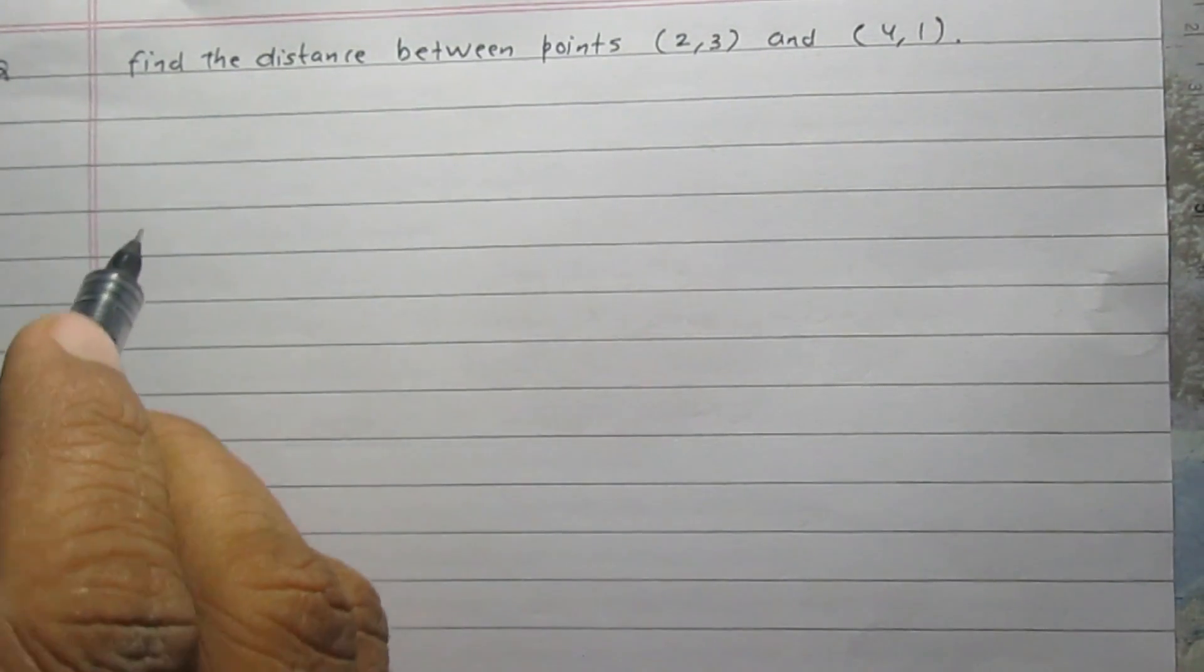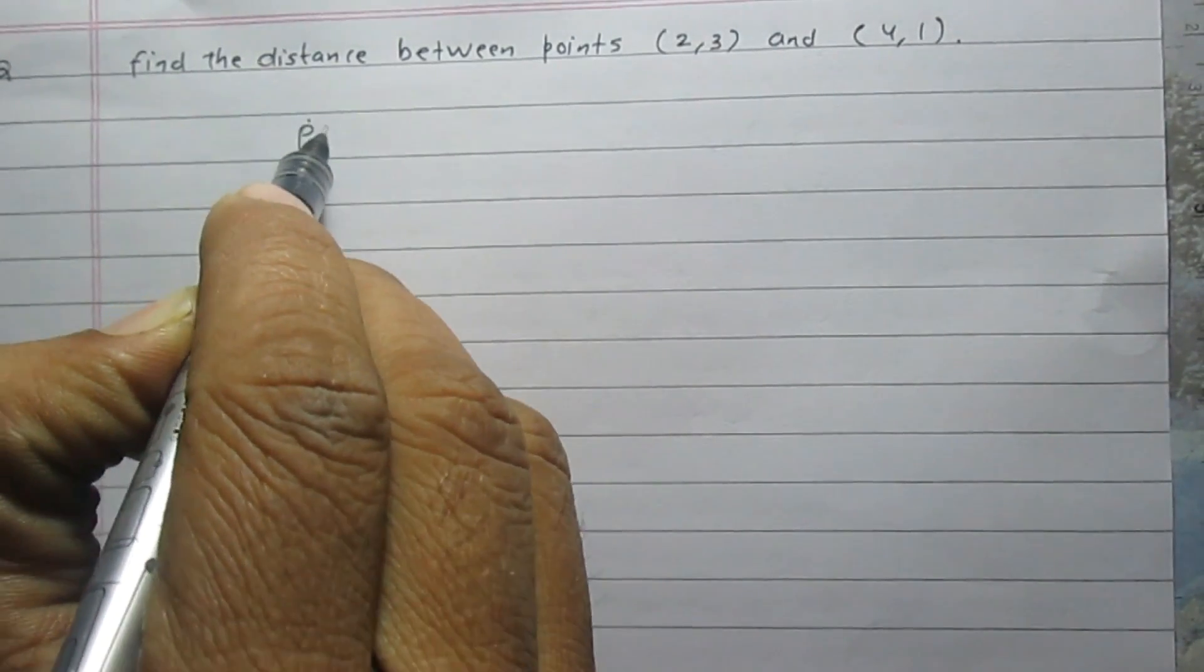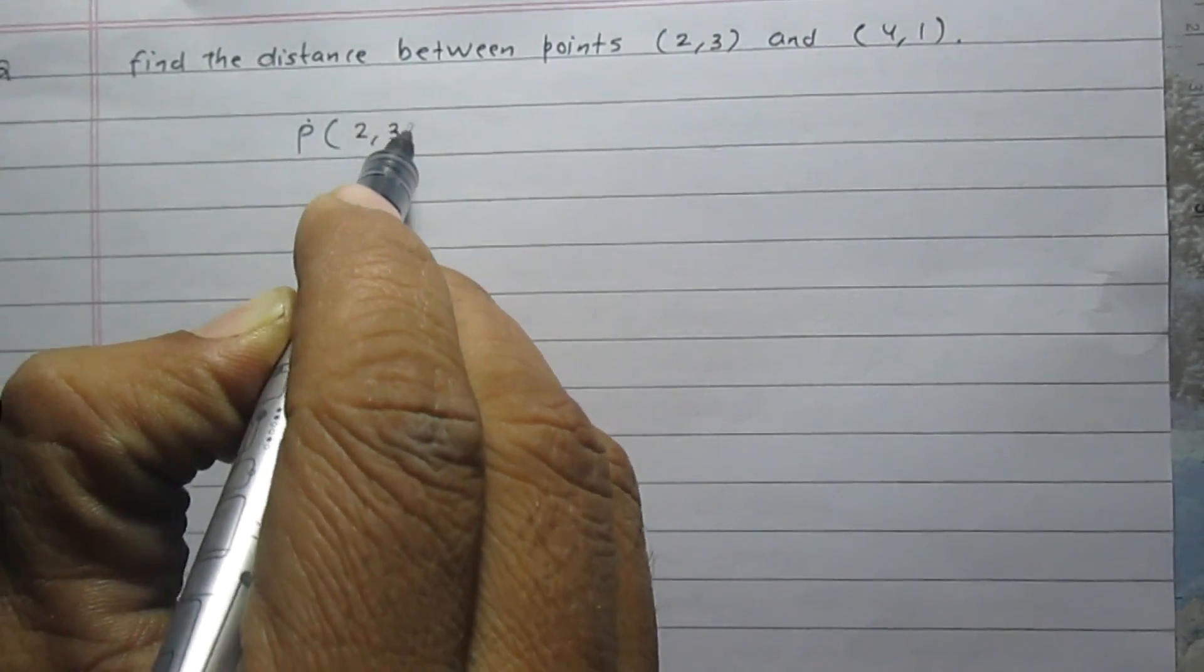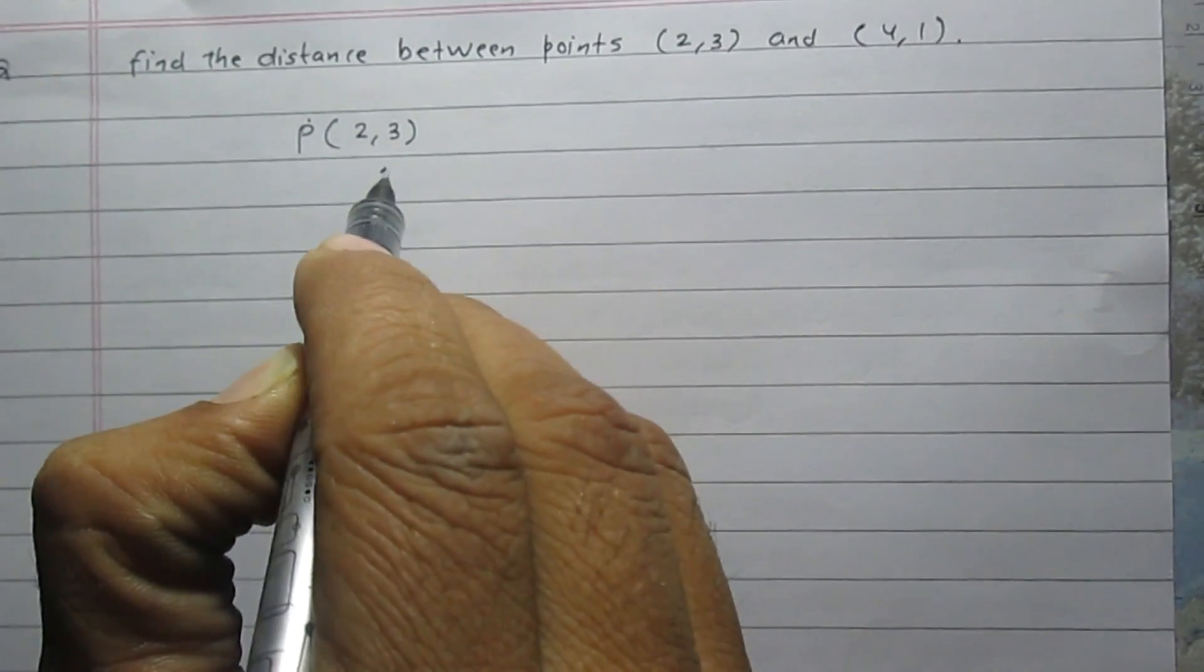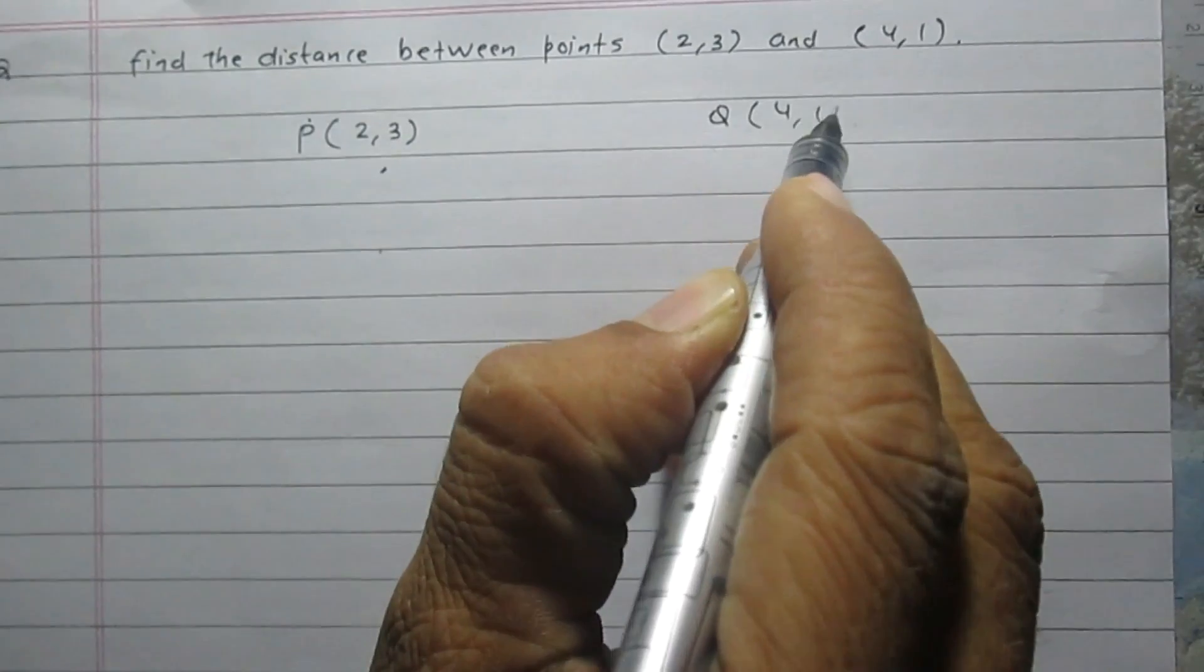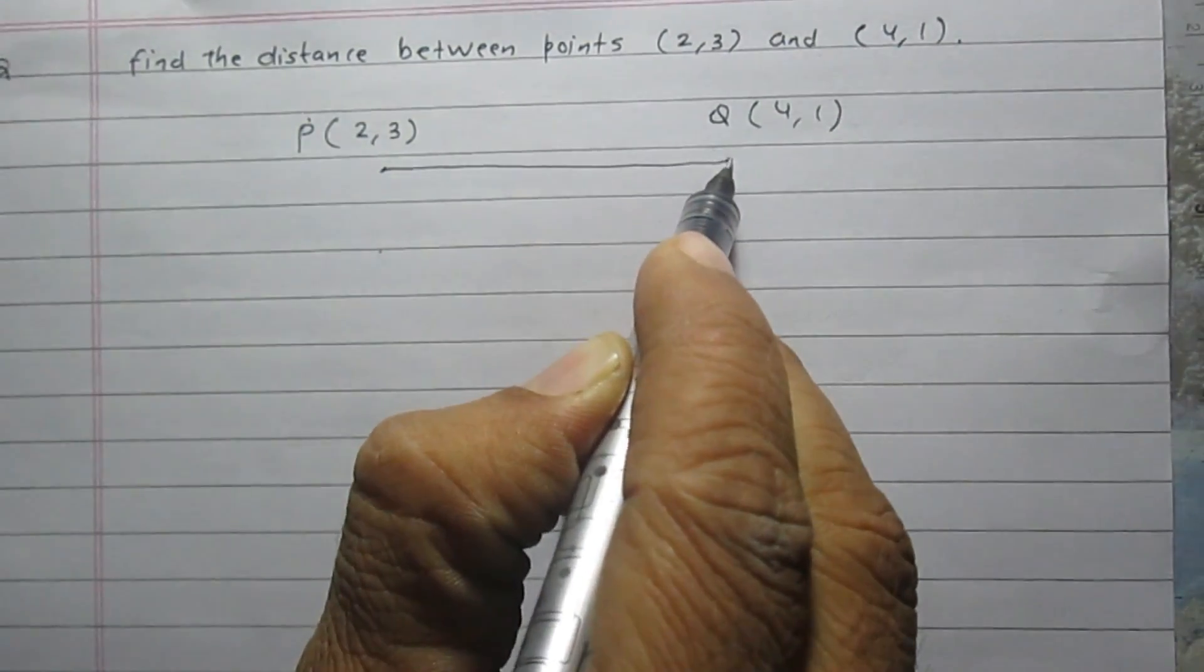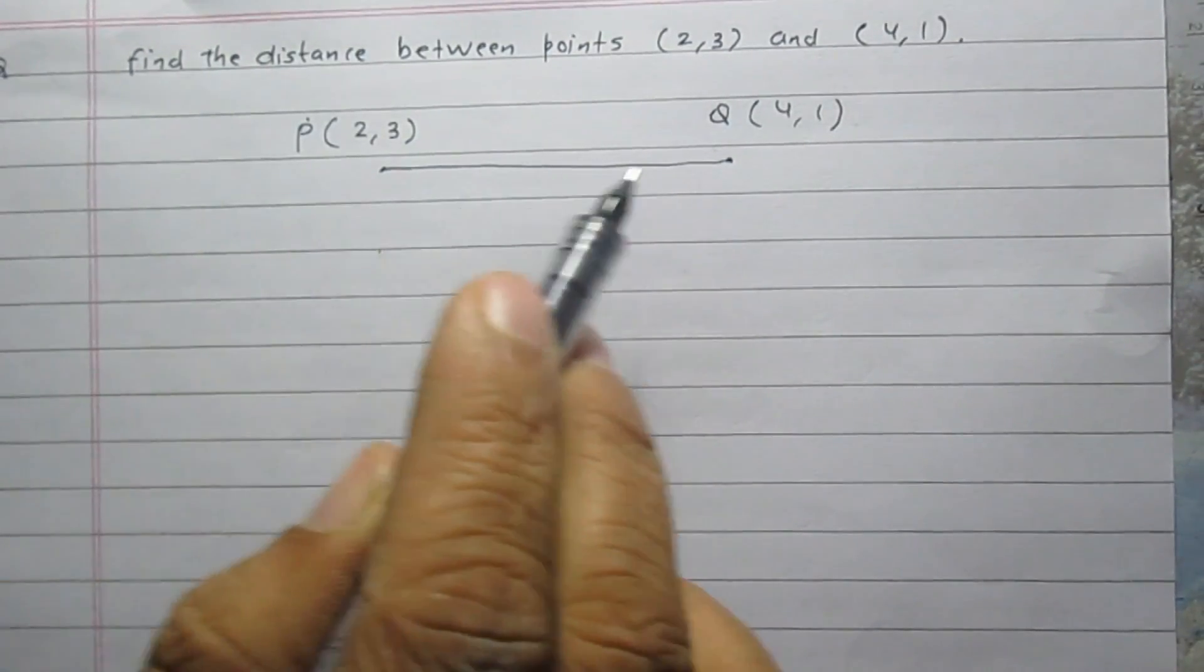Let us consider the first given point as point P with coordinates (2,3). The second point is point Q with coordinates (4,1). We are to find the distance between point P and point Q.